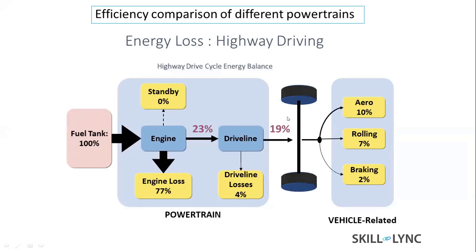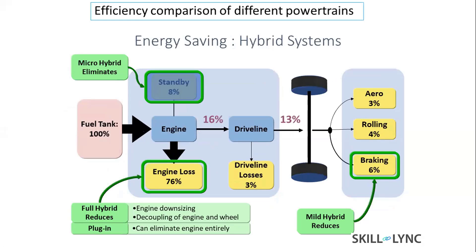How does the electric vehicle improve on this? For hybrids, the micro hybrid eliminates standby (idling) losses — the same example seen in the Maruti Suzuki Ciaz and S-Cross — removing that 8% loss. Some mild hybrids also improve engine efficiency further. Additionally, in conventional vehicles, around 6% of energy is lost as heat during braking. In an electric vehicle, the motor can convert that thermal energy back into electrical energy and store it in the battery — this is the beauty of regenerative braking.